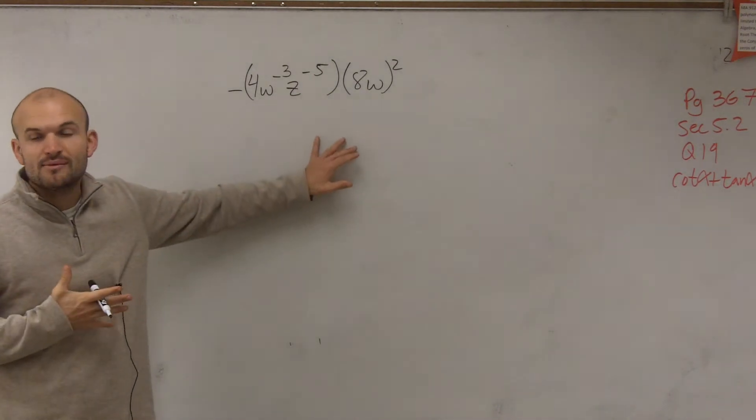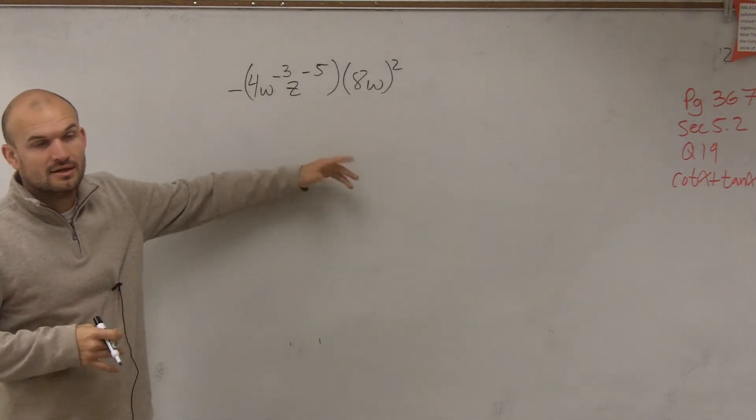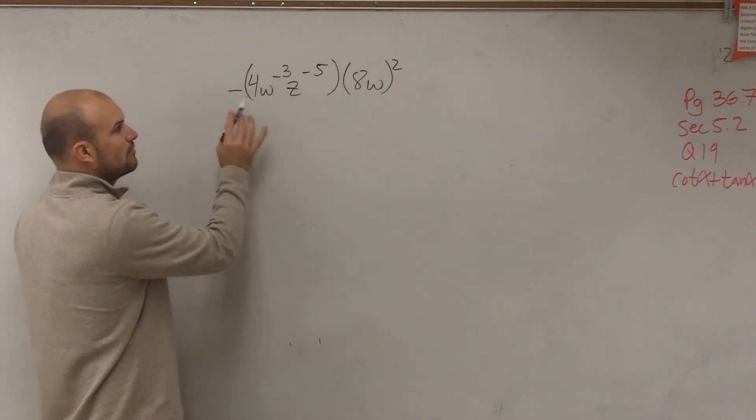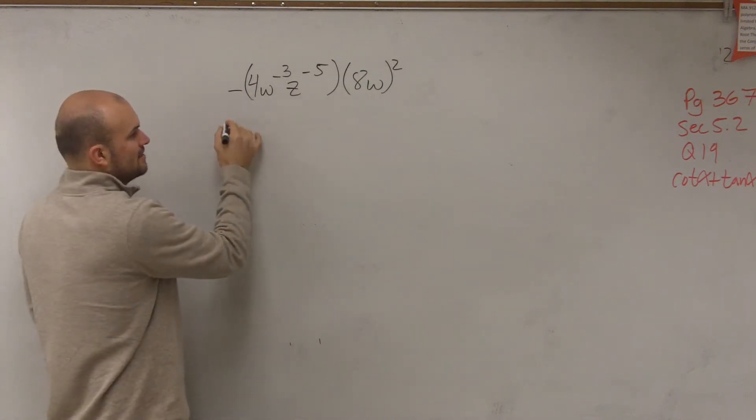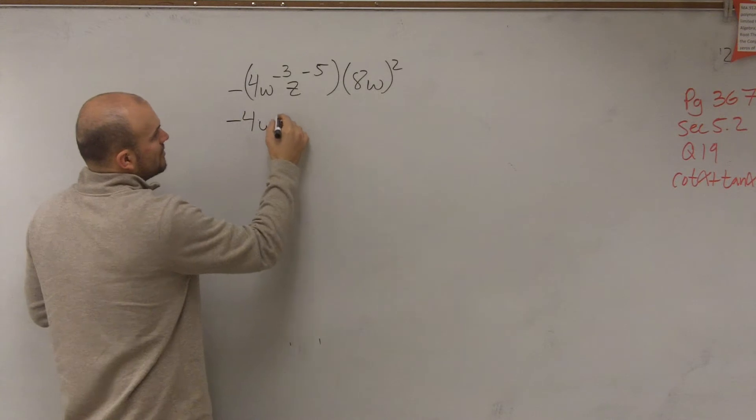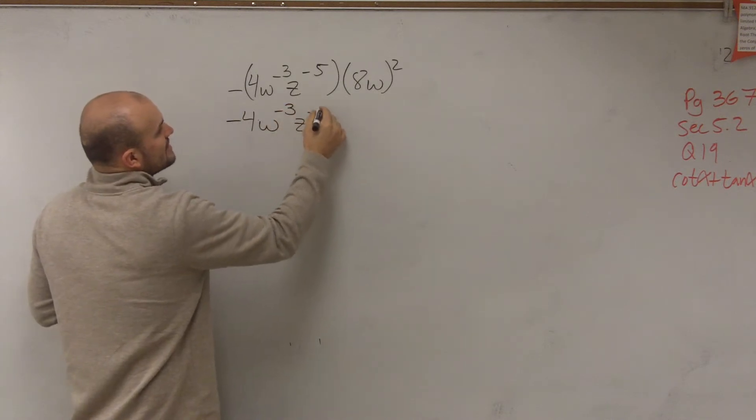The main important thing is we want to get rid of our parentheses. How can we do that? Well, all I need to do is distribute my negative sign. So I do negative 4w to the negative third, z to the negative fifth.